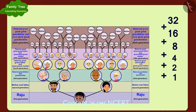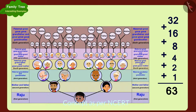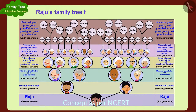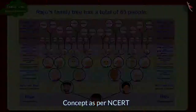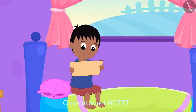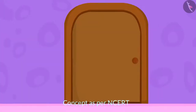First we will write down the number of people present in every generation, then to find out the total number of people in Raju's family tree, we only have to add the number of people from all these generations. In this way, Raju's family tree has a total of 63 people.